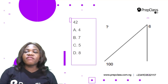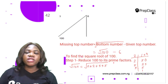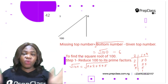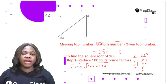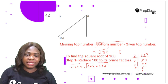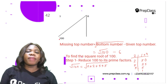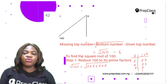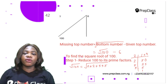Question 42: we are given one top number and the bottom number, and the second top number is missing. To find the missing top number, take the square root of the bottom number and subtract the given top number. The formula is: missing top number = √(bottom number) − given top number. The bottom number is 100, so we need √100 minus 6.